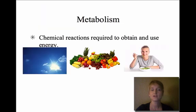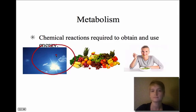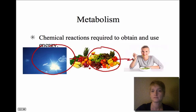Metabolism is all of the chemical reactions that are required to help you obtain and use energy. All energy comes from the sun. Plants use that energy to make their own energy, and then we in turn will eat those plants or eat meat, which came from an animal that probably ate plants.